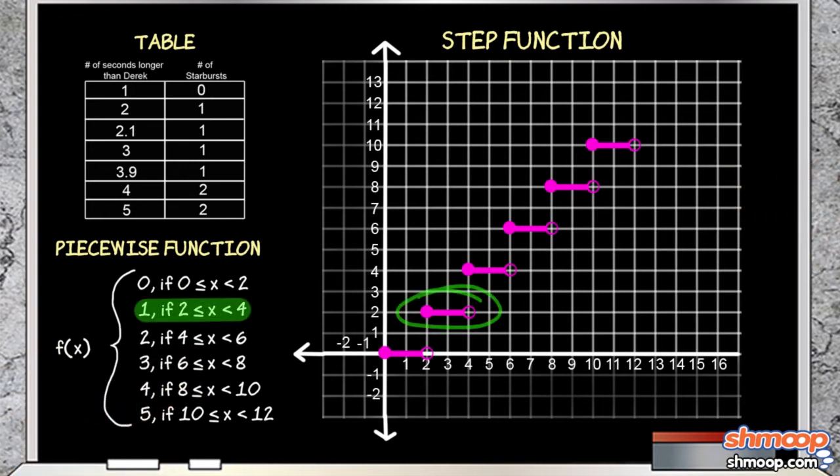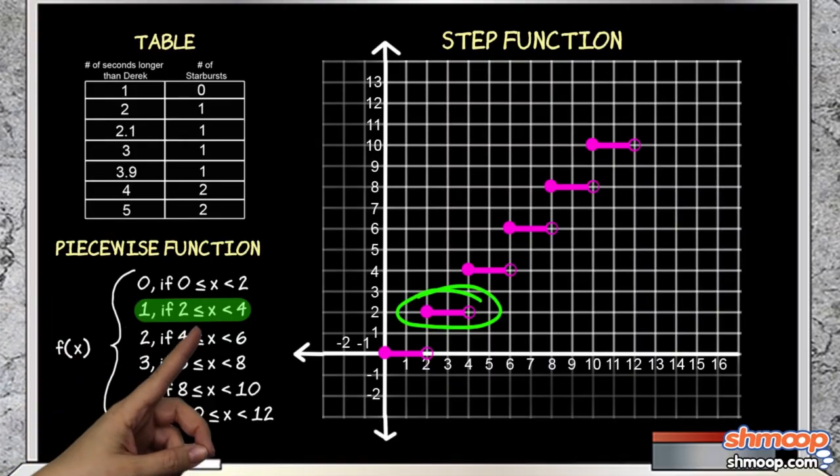f of x equals 1 when x equals anything between 2 and 4. Since the function uses a less than or equal to symbol next to the 2, 2 is included in this function.